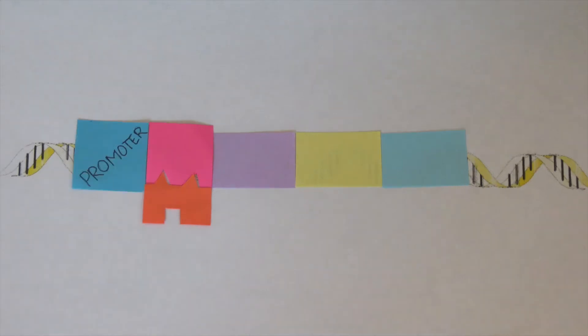The promoter is the region on the DNA where the RNA polymerase can attach and move down and produce proteins on the genes further down, which we will discuss later.